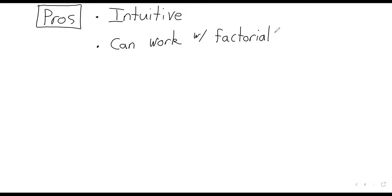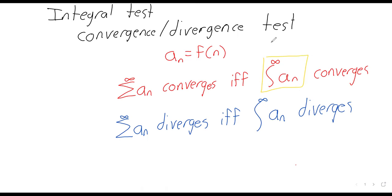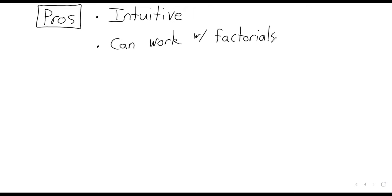The comparison test can also work when we have factorials. This probably doesn't seem like an enormous pro at the moment, but when we start actually using these series, we're going to find that almost every series that matters has a factorial in it. That's one of the great failings of the integral test — you can't integrate factorials. But you can sometimes make comparisons with them.